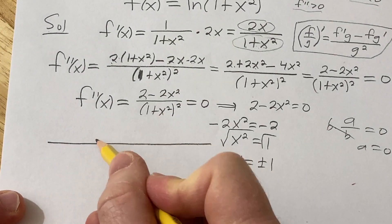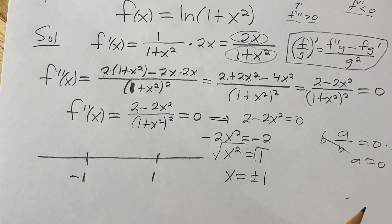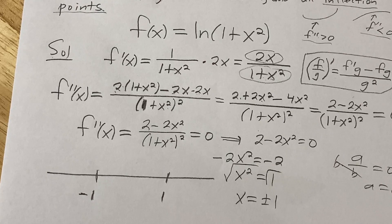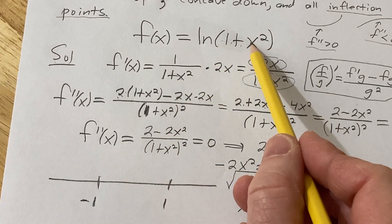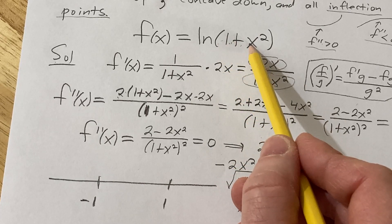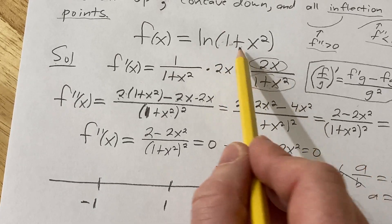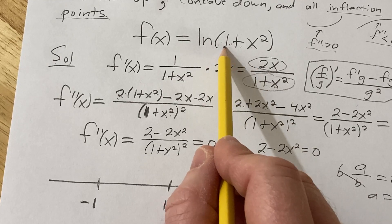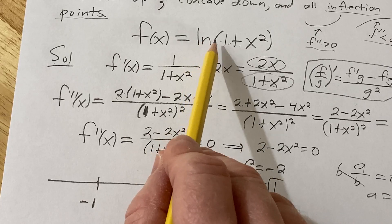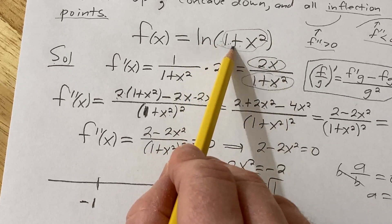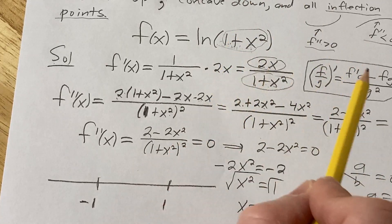We have to think about domain restrictions — we do have a log function. In this case I don't think there are going to be any, because we have 1 plus x squared. If x is 0 we just get the natural log of 1. If x is negative or positive, x squared is going to be positive, and a positive number plus 1 is positive, so all is good. Remember, the domain of ln(x) is only x greater than 0, so you do want to think about that. The domain of this function is all real numbers, so there are no issues.